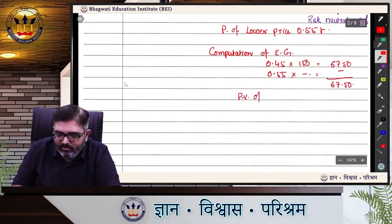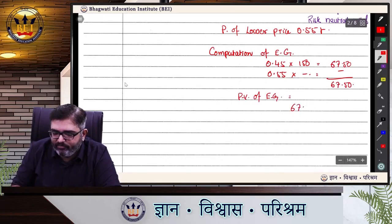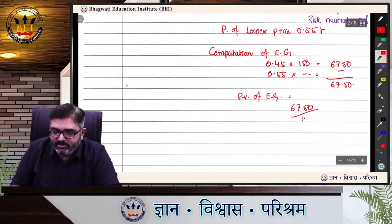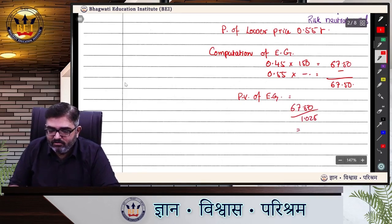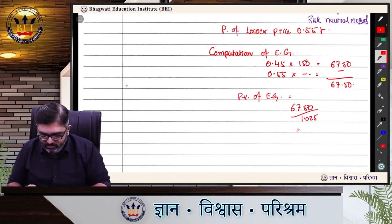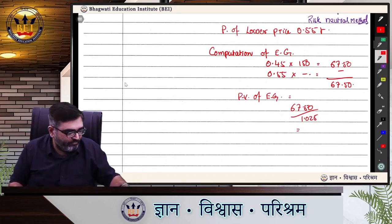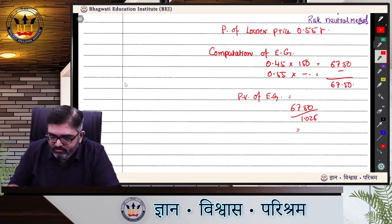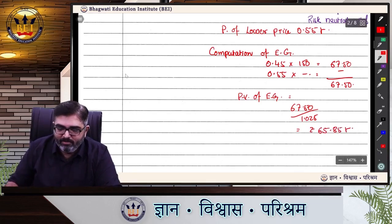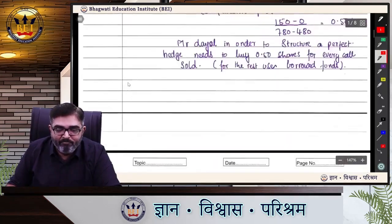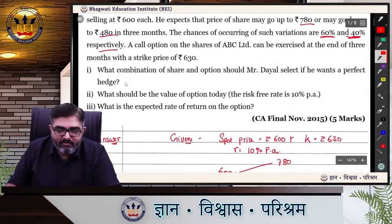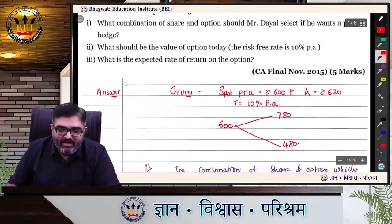Now compute the present value of expected gain, which is nothing but the value of the option. The expected gain is 67.50, which is 3 months from now. The risk-free rate is 10% per annum, so the discount factor for 3 months is 1.025. Present value = 67.50 / 1.025 = 65.85. So the fair value of the option today is Rs. 65.85, and that answers 'what should be the value of the option today.'